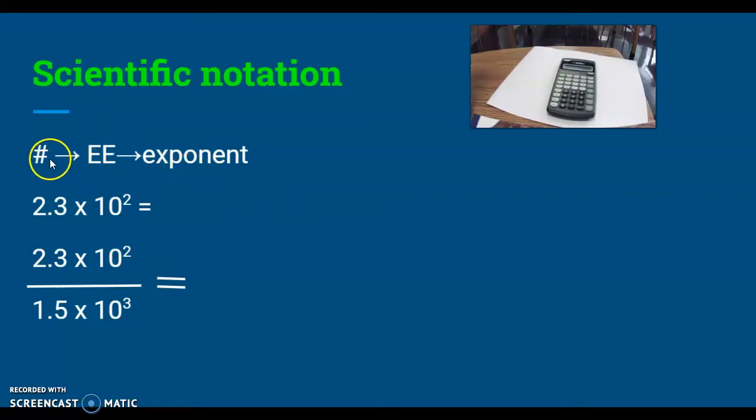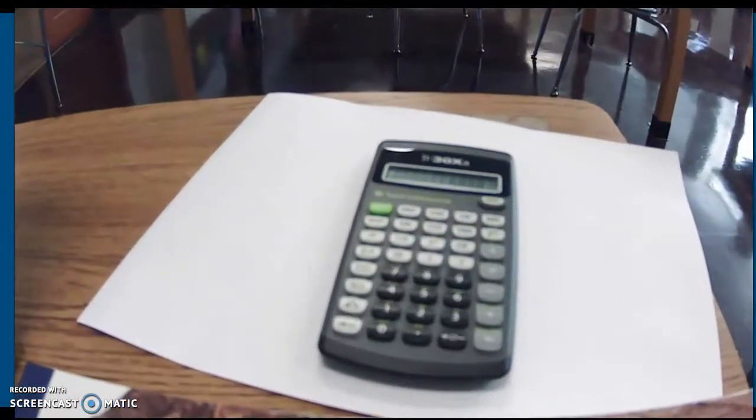In this particular case, you type in your number, so you type in the coefficient. In this case, it would be 2.3. Then you hit the EE button and then you add your exponent. Let me show you what that looks like real quick.